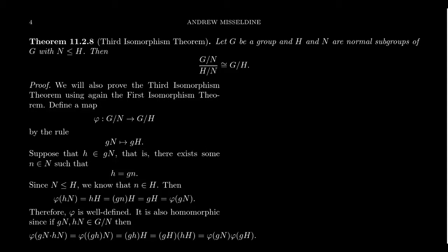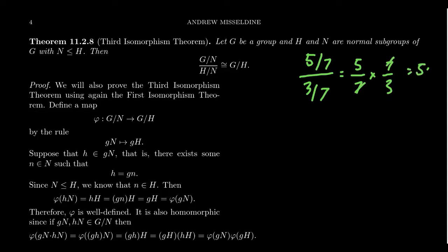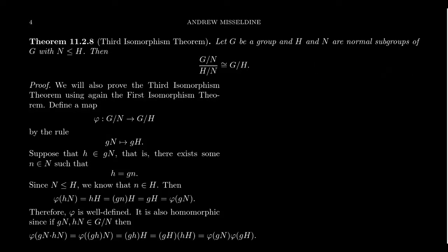If a college algebra student walked in right now they'd say: G divided by N, divided by H divided by N — cancel the N's and you get G over H. For example, take five-sevenths divided by three-sevenths: multiply by the reciprocal, the sevens cancel, and you get five-thirds. For arithmetic that's exactly justifiable, and it turns out we can do the same thing for groups in perhaps a less obvious way. That's the statement of the theorem.